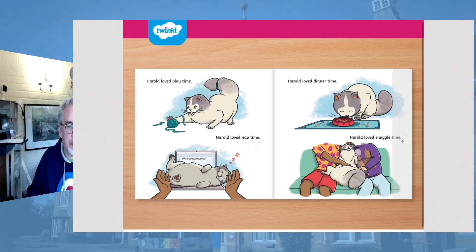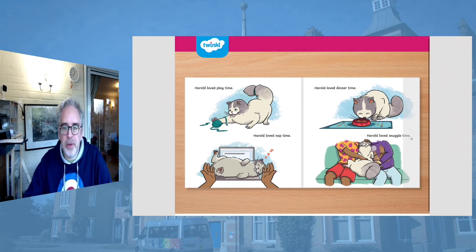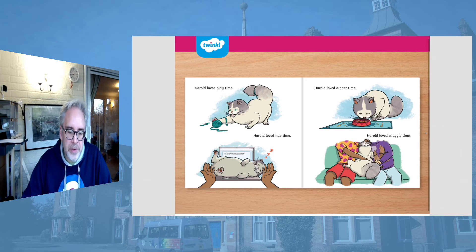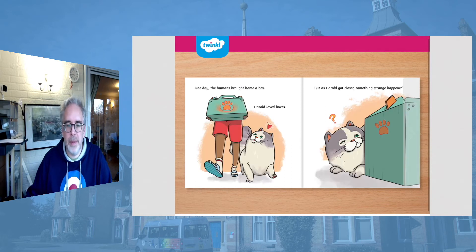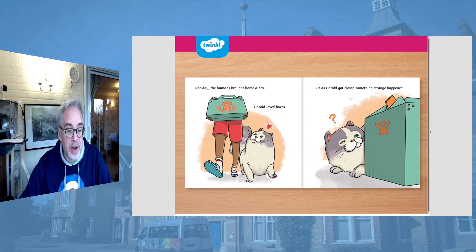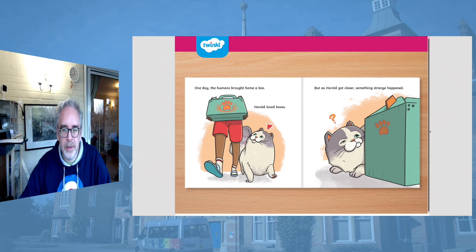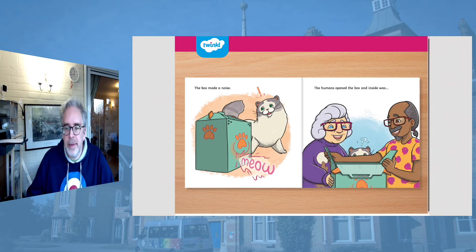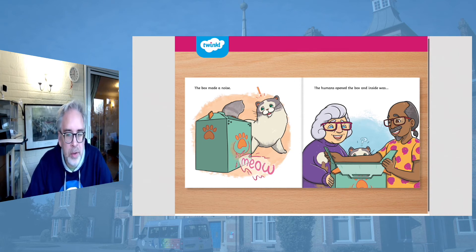Harold loved playtime. Harold loved nap time. Harold loved dinner time. And Harold loved snuggle time. Which one of those things do you think would be your favourite if you were Harold? One day the humans brought home a box. Harold loved boxes. But as Harold got closer, something strange happened. Who can remember what it was? The little box made a noise — can we all do the noise together? Ready? One, two, three — meow!